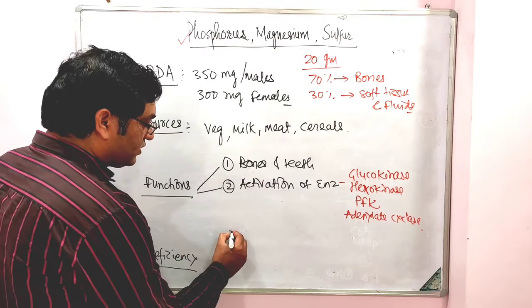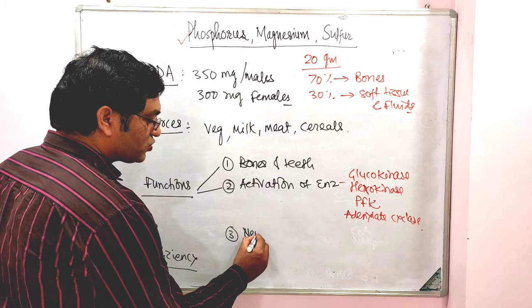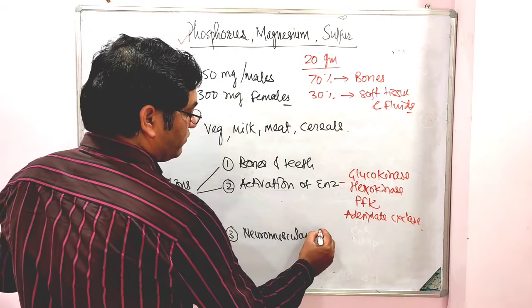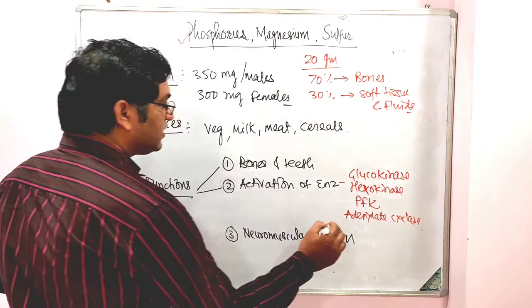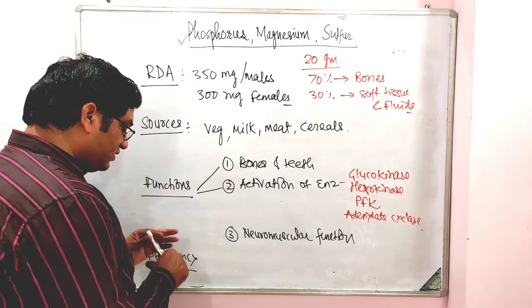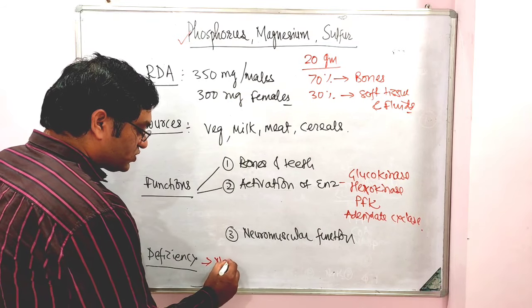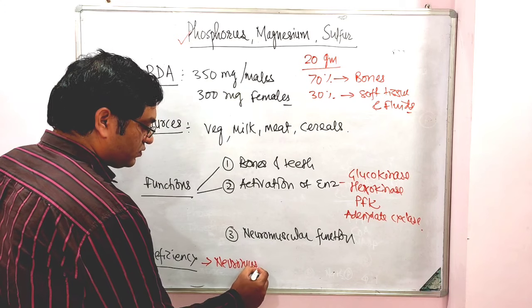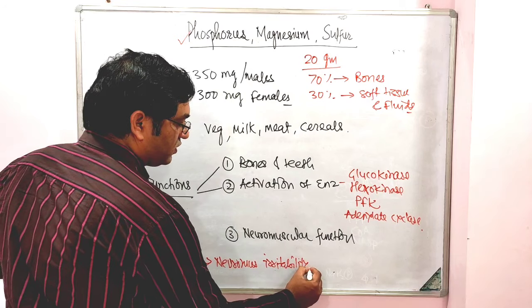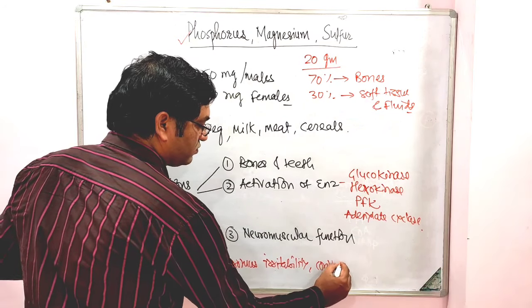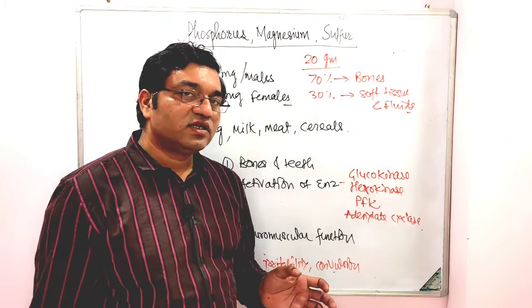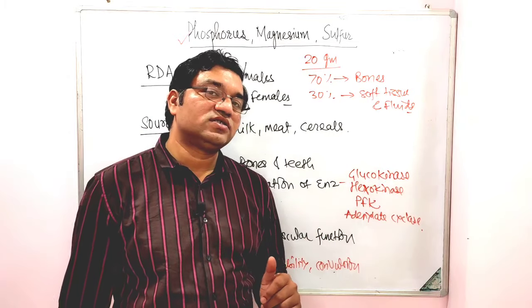Third important function: Magnesium is required for neuromuscular function. In deficiency of magnesium, there is neuromuscular irritability. The deficiency manifestations are mostly similar to those of tetany, which occurs mainly due to deficiency of calcium. So it is similar to tetany — neuromuscular spasm, neuromuscular irritation, and convulsions — and it is relieved by giving magnesium.